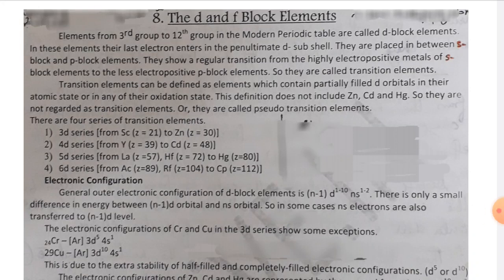Let us begin a new chapter on D-block and F-block elements. The elements from the third group to the twelfth group in the modern periodic table are called D-block elements. In these elements, their last electron enters in the penultimate D sub-shell. They are placed in between S-block and P-block elements, showing a regular transition from highly electropositive metals of S-block to less electropositive P-block elements — so they are called transition elements.